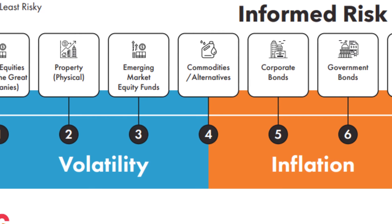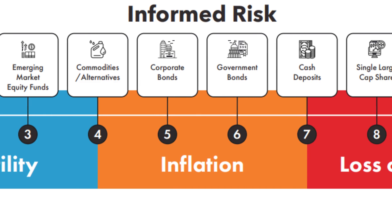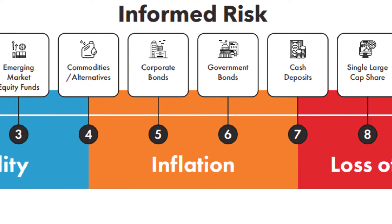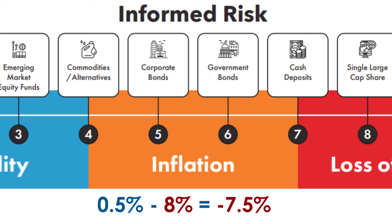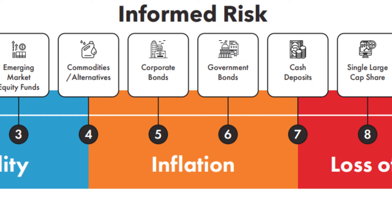Then physical property — so that's buying a house, bricks and mortar, because it's tangible, you can see it. Emerging markets — the growing companies in the world. Then, as we've gone up the scale, we've got commodities, corporate bonds, government bonds, and cash. Now, these are becoming a bit more risky because they drop into the inflation bracket, which means they're at risk from inflation. Because cash deposits in the bank might get you half a percent return, but inflation is running at around the 8% figure. That means technically, year on year, you're losing 7.5%, because the cost of bread, milk, and sugar is going up, but what you have in the bank isn't going up.